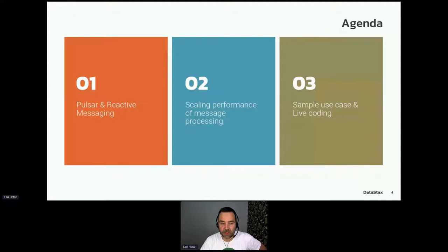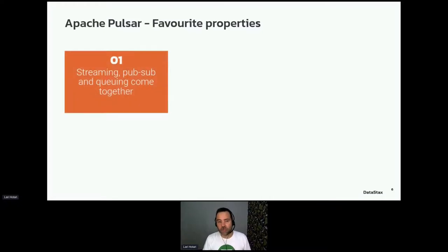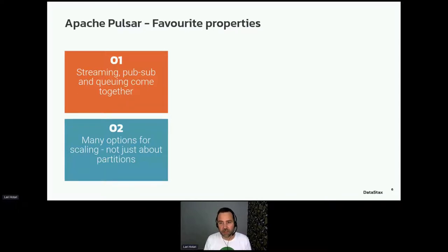We'll start with Pulsar and reactive messaging. The favorite properties of Apache Pulsar for me are that it's a platform where streaming, pub/sub, and queuing come together — you get the best parts of Apache Kafka and RabbitMQ in a single platform. You don't need two separate systems for streaming and queuing use cases. There are many options for scaling through queuing properties, including competing consumers with a single partition, and a key-shared mode with multiple consumers retaining key order.